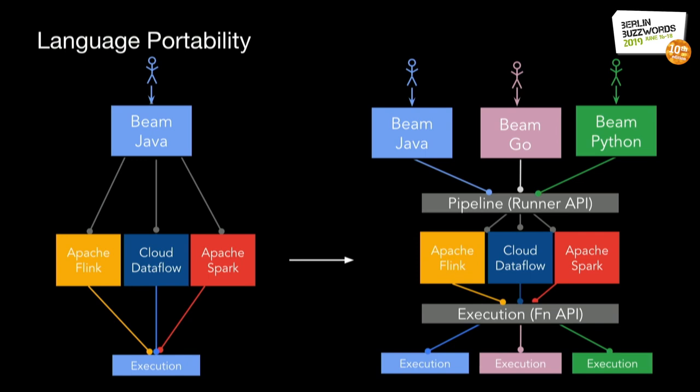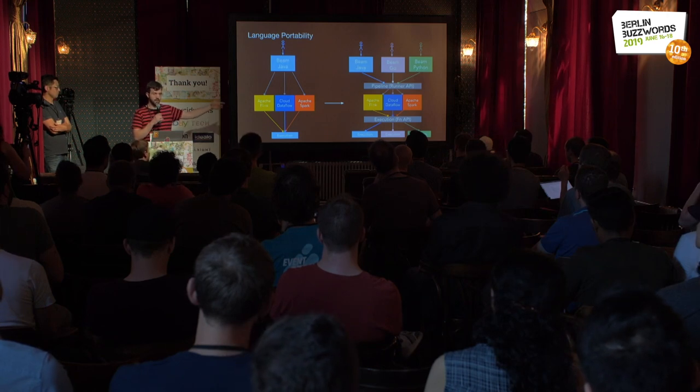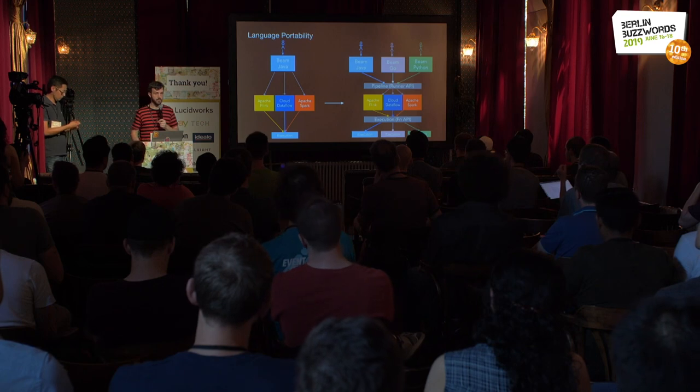The runner only has to take this intermediate representation. To execute Python or Go code, we have the FN API — an interface that all runners implement against. You write a wrapper for Python, Java, or Go that handles execution of user code against that API: to send data, retrieve state, it's all specified there. So we just implement both interfaces — runners implement the FN API, and SDKs generate the Runner API pipeline definition. Any runner can then build against any language, or you can create a new SDK implementing those two interfaces and you're done. That's the elegant design.